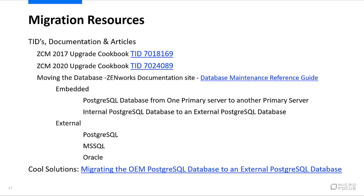Options in the reference guide include: embedded PostgreSQL database from one primary server to another, internal PostgreSQL to external PostgreSQL, and external PostgreSQL, MS SQL, or Oracle migrations. For retiring a primary server, check the maintenance reference guide. There is also a Cool Solutions article on migrating the OEM PostgreSQL database to an external PostgreSQL database.